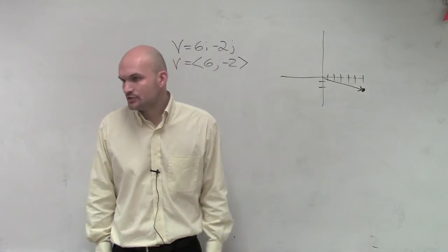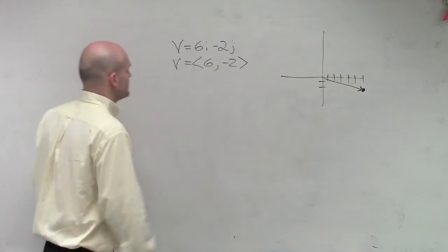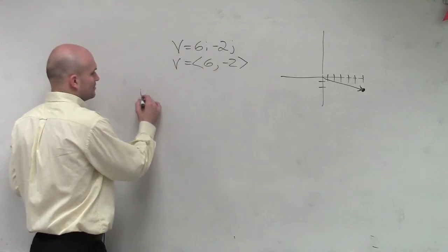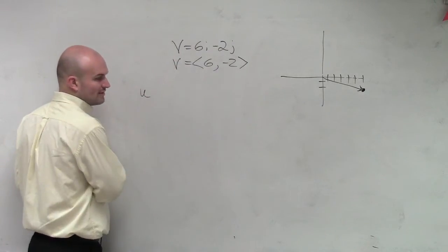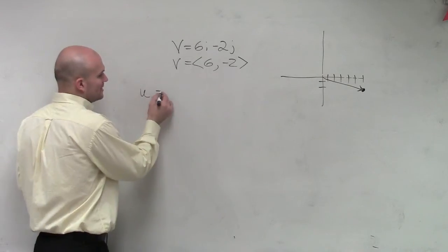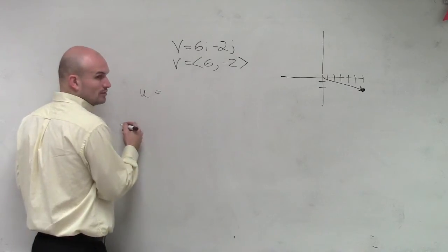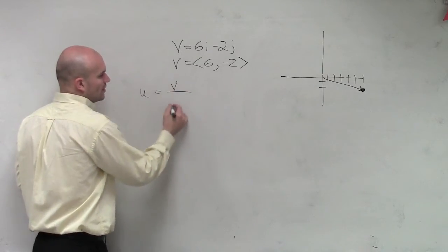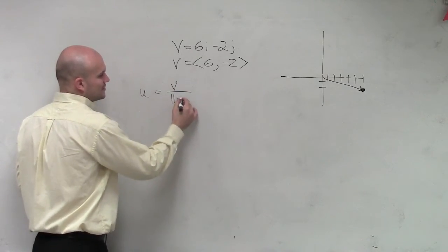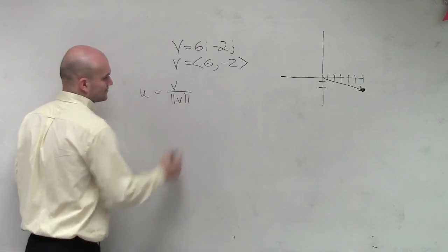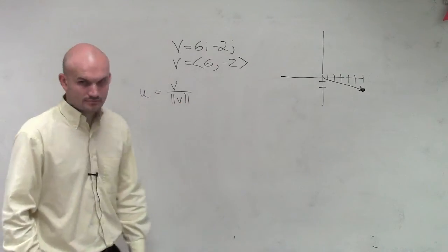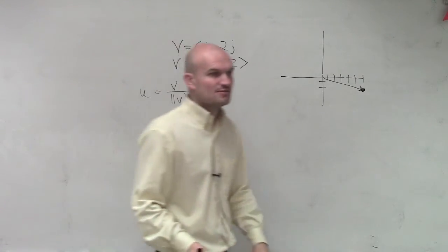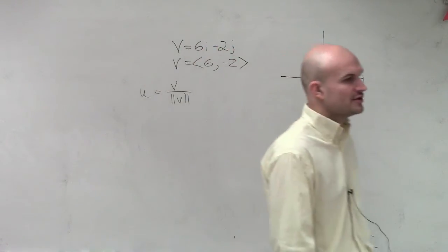So how do we do that? Well, the unit vector u is going to equal v over the magnitude of v. So that was our formula for our unit vector.